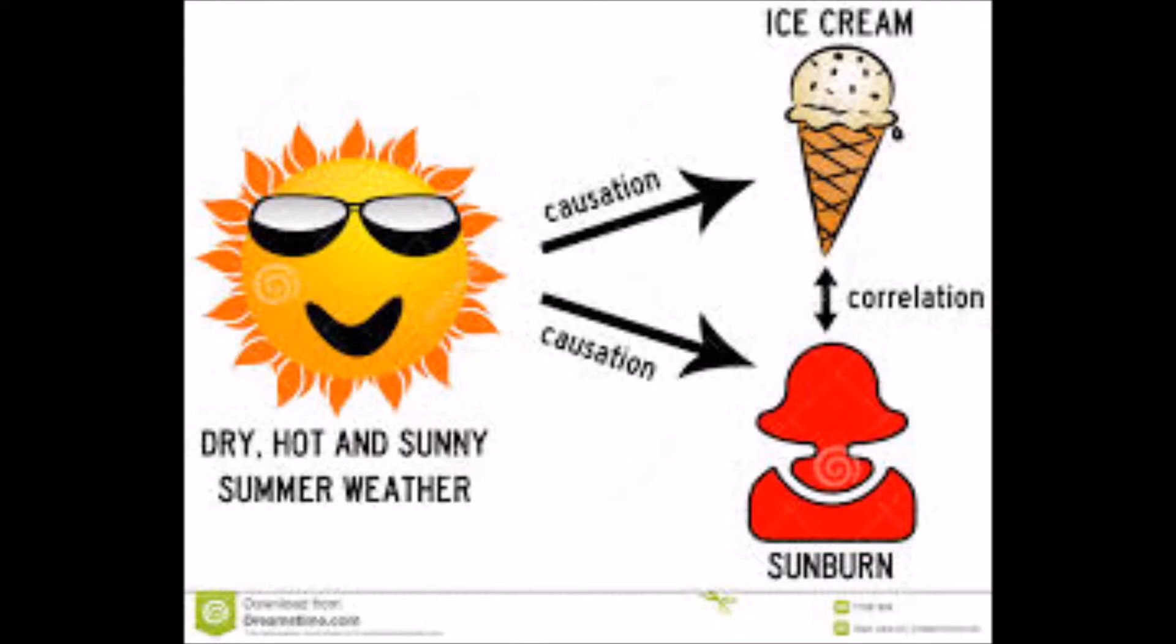Quick example for correlation would be ice cream sales and mean temperature. We tend to think of people buying ice cream more in the summertime, so we would assume that if the temperature rises that ice cream sales could rise also. That is an example of correlation. Temperature goes up, ice cream sales go up.